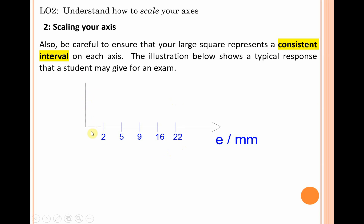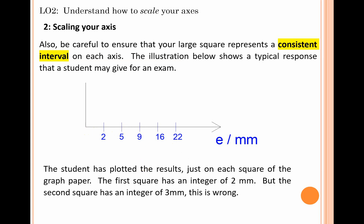Let's say they've got five sets of results for extension depending on the respective load that they've gathered. Their actual raw data has extensions of 2, 5, 9, 16, and 22 millimeters respectively. Some students will just literally put their raw data figures that they're provided in the examination for each square, and that's problematic. The first square is showcasing an interval of 2 millimeters, the next one's got an interval of 3 millimeters, the next one's got an interval of 4 millimeters. They're not consistent, and as a result you will lose marks in the exam.